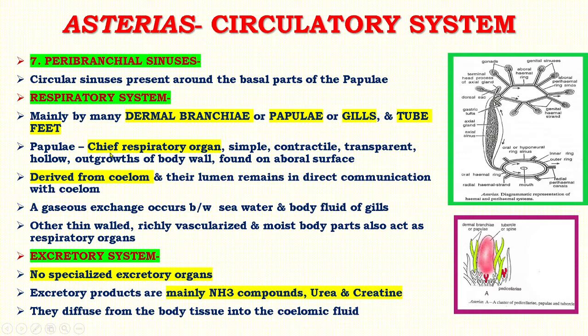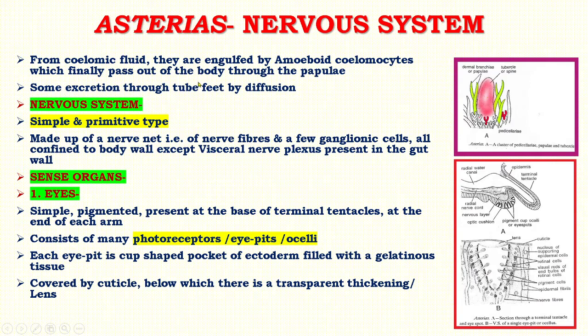Papuli or dermal branchiae act as the chief respiratory organs. Next is the excretory system — there is no specialized excretory organ. Excretory products are mainly ammonia compounds, urea, and creatine, which diffuse from the body tissue into the coelomic fluid. From the coelomic fluid they are engulfed by amoeboid coelomocytes, which finally pass out of the body through the papuli. Some excretion also occurs through the tube feet by diffusion.